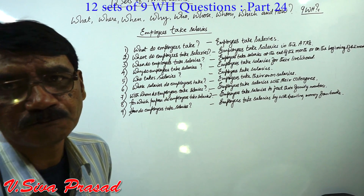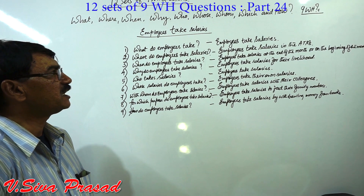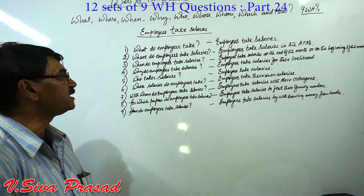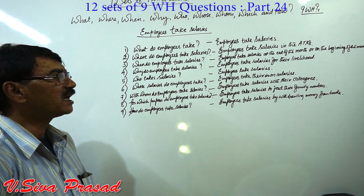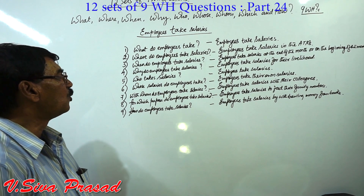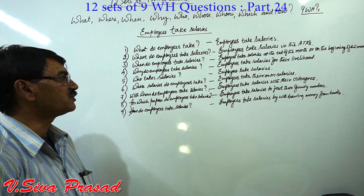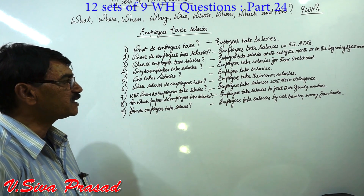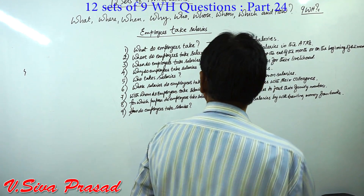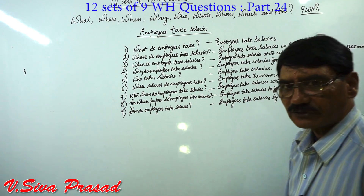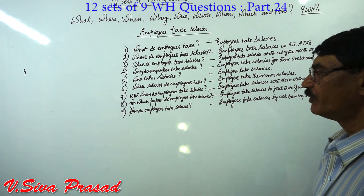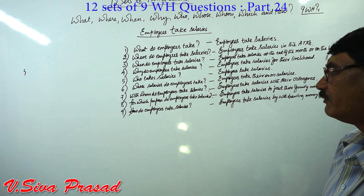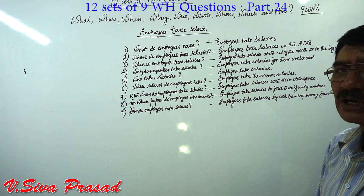Set 7 — Present Perfect: What have employees taken? Employees have taken salaries. Where have employees taken salaries? Employees have taken salaries in the ATMs. When have employees taken salaries? Employees have taken salaries at the end of the month or at the beginning of the month. Why have employees taken salaries? Employees have taken salaries for their livelihood. Who has taken salaries? Employees have taken salaries. Whose salaries have employees taken? Employees have taken their own salaries. With whom have employees taken salaries? Employees have taken salaries with their colleagues. For which purpose have employees taken salaries? Employees have taken salaries to feed their family members. How have employees taken salaries? Employees have taken salaries by withdrawing money from the banks.